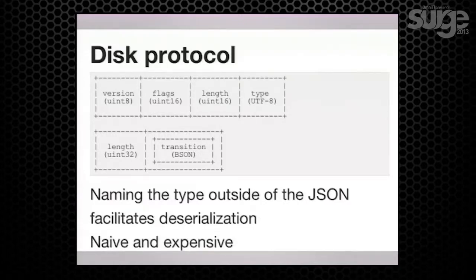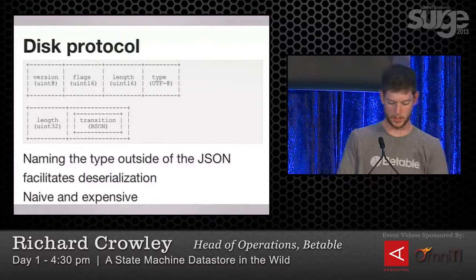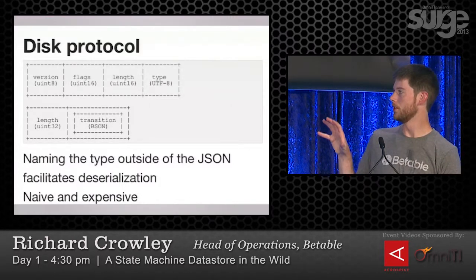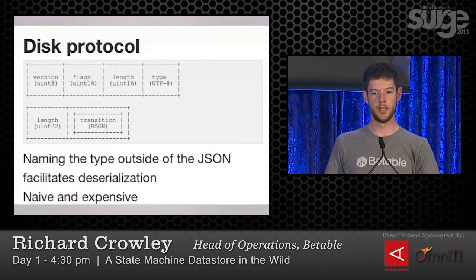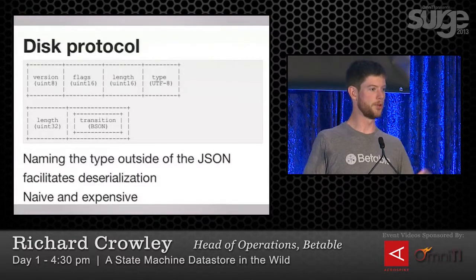On disk, all these entities and transitions are laid out as essentially length-prefixed BSON. The interesting thing is that the name of the type is outside of the actual BSON payload. This is a side effect of using a statically typed language — in order to deserialize something into a Go object, you have to know the type to allocate to put it in. So we need that type name before we deserialize so we can create something to put it into. That's why the protocol is the way it is. We built it this way because in this part of the system, the simplest possible solution gives us the most flexibility into the future.